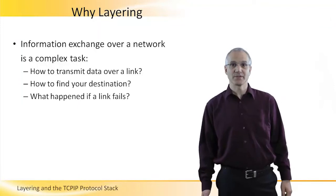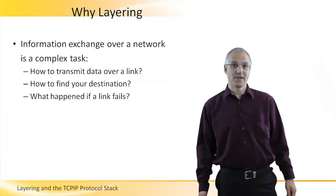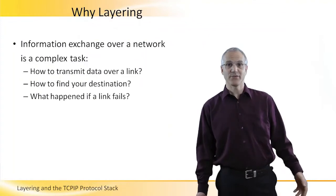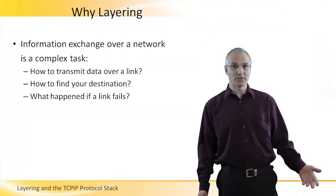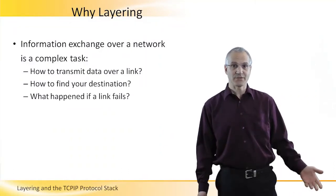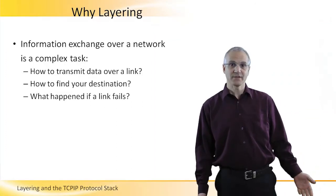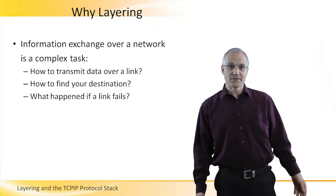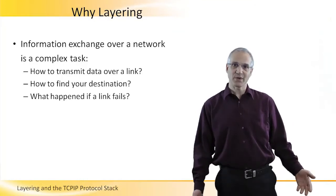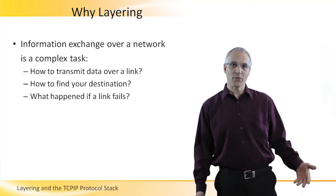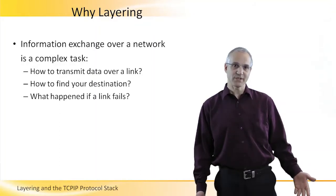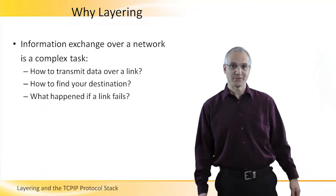Exchanging information over a network is a very complex task. You first need to find your destination, then you have to transmit your data over possibly multiple links. You have to take into account all kinds of events like congestion and link failures. It's very hard to think of all these things together and solve all these problems at once. Thus, we need to think of a way to break these things into smaller tasks in order to plan and make a network work.